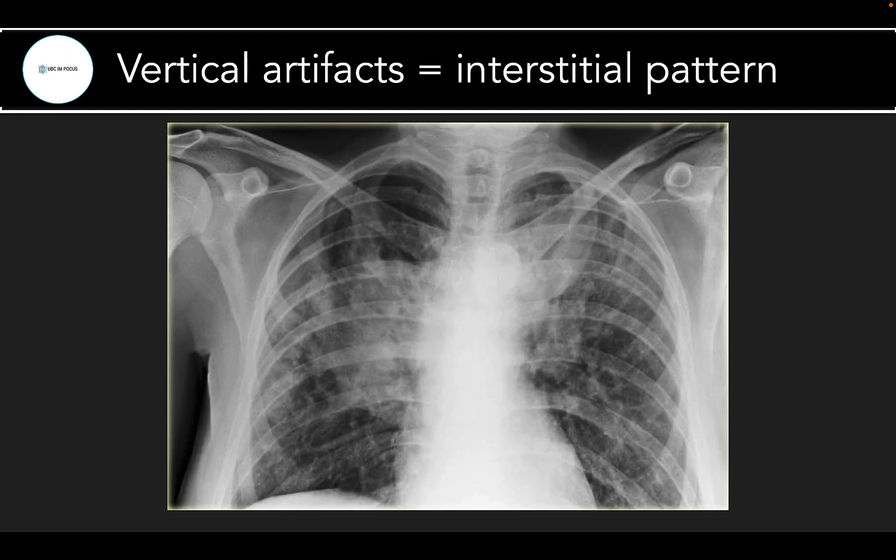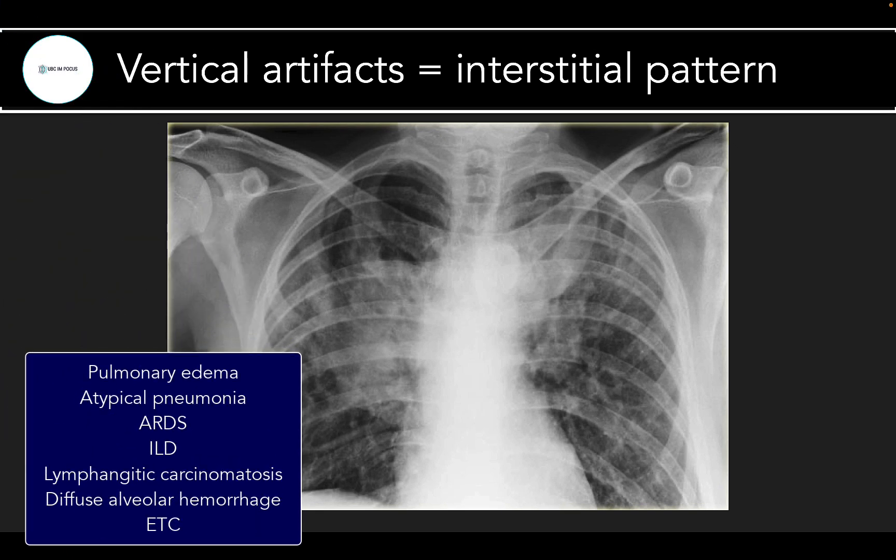The differential for B-lines is exactly the same as the classic differential for an interstitial pattern on chest X-ray. Anything that can fill the interstitium — water, blood, pus, fibrin, cells, etc. — can give you B-lines. So cardiogenic pulmonary edema, but also atypical pneumonias, ILD or IPF, lymphogenic carcinomatosis, and all those kinds of things can also give you vertical artifacts.